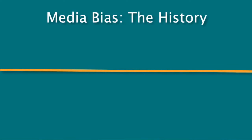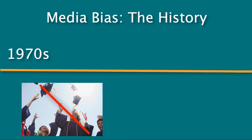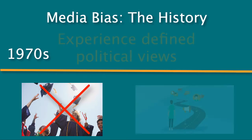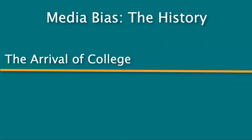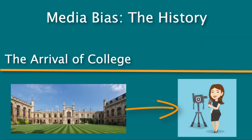First, let's take a look at the history behind media bias — how did this phenomenon even come to be? In the 1970s, when reporters first began to pop up, many of them lacked college degrees and biases tended to reflect the upcoming and past experiences of the individual. And as colleges came into view, reporters were shaped by the political views of their institutions.